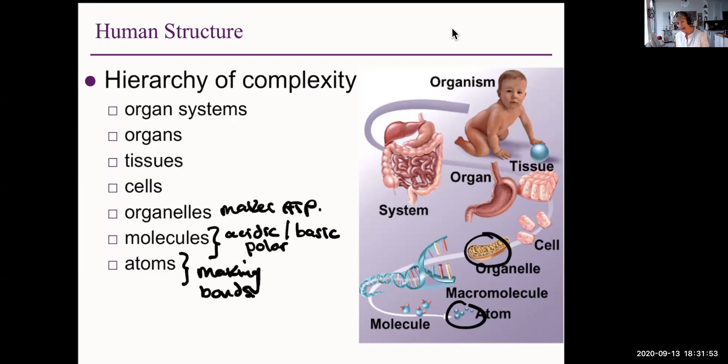All the organelles in a cell get together to make up that cell, and cells perform all the functions of life. Cells get together to form tissues, and tissues have very specific functions. In this case here, the tissue is columnar epithelial tissue of the stomach, and it can absorb nutrients, for example.